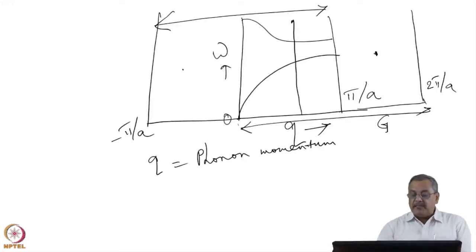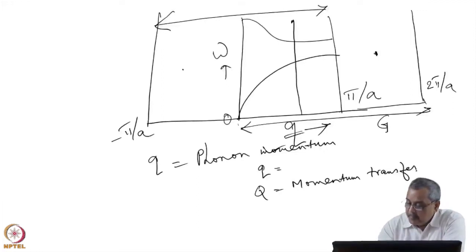Because the phonon dispersion relations in a crystalline lattice depend on the direction of propagation or the direction of the wave vector q, and there are specific symmetry directions in a crystal along which the phonon dispersion relations will change depending on the direction that you are following, and all of them need to be found out experimentally. So I have got q which is phonon momentum vector, Q is the momentum transfer in the experiment, and G is the reciprocal lattice vector.